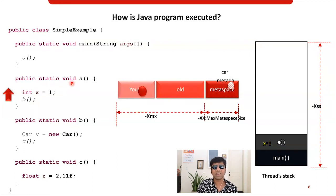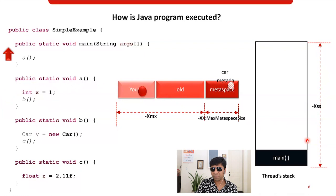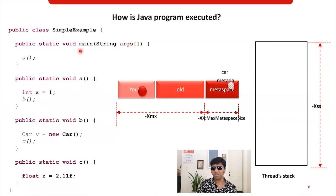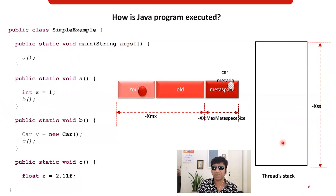Now the thread has exited method B. It goes on to exit method A — that stack frame is removed. Then it exits the main method — the main method stack frame is also removed. But the thread stack that was created is going to remain there until the thread terminates.